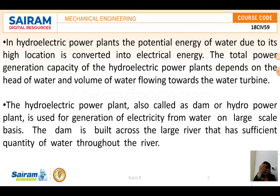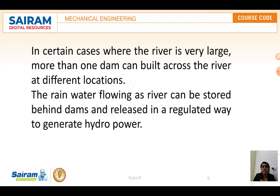Hydropower plants can be classified into three categories: run-of-river, storage, and pumped storage. In certain cases where the river is very large, more than one dam can be built at different locations. Rainwater flowing as a river can be stored behind the dams and released in a regulated way to generate hydropower.